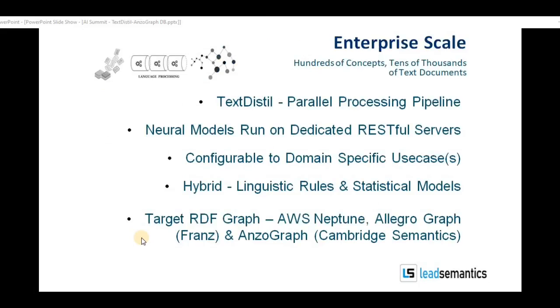TextDistil is flexible. You can configure rules to apply at the lexical and syntactic level, as well as at the semantic level. The pipeline uses hybrid architecture over linguistic rules and statistical models. It is a parallel and scalable pipeline, scales to hundreds of concepts like the many domain-specific nominals that are to be treated as named entities, and scales to hundreds of thousands of documents in execution.